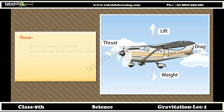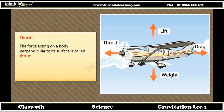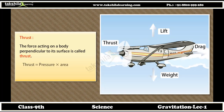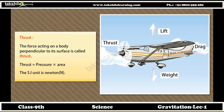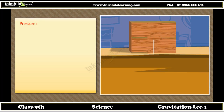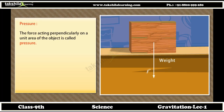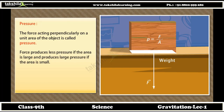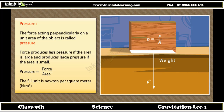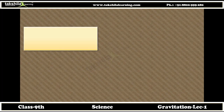Thrust: the force acting on a body perpendicular to its surface is called thrust. Thrust = pressure × area; the SI unit is Newton. Pressure: the force acting perpendicularly on a unit area of the object is called pressure. Force produces less pressure if the area is large and produces large pressure if the area is small. Pressure = force / area; the SI unit is Newton per square meter.